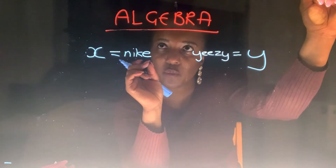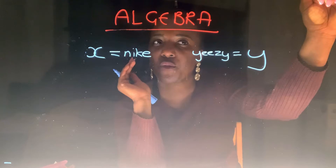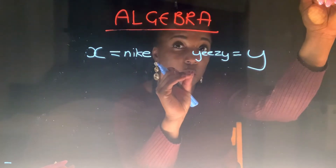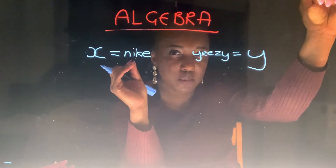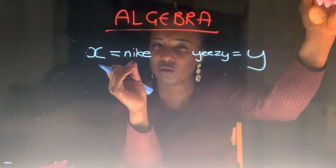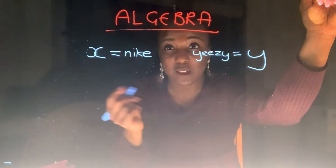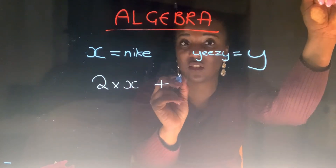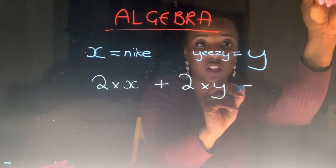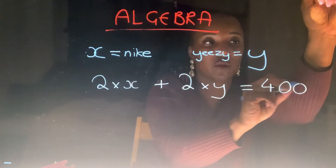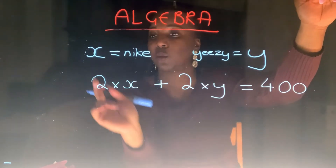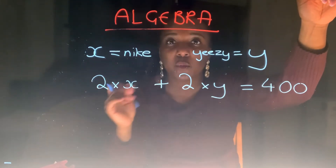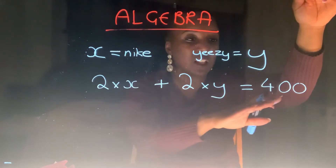Now, if I told you that I bought two pairs of Nike 97s and two pairs of Yeezys and it came to a total of 400 pounds, could I write that in a word equation? Well, yes I could. Basically, what I've said is two times X and two pairs of Yeezys, two times Y, is equal to 400. We've got a multiplication in there, we've got X's and numbers, but we understand this concept of two pairs of Nikes and two pairs of Yeezys giving us a total of 400 pounds.